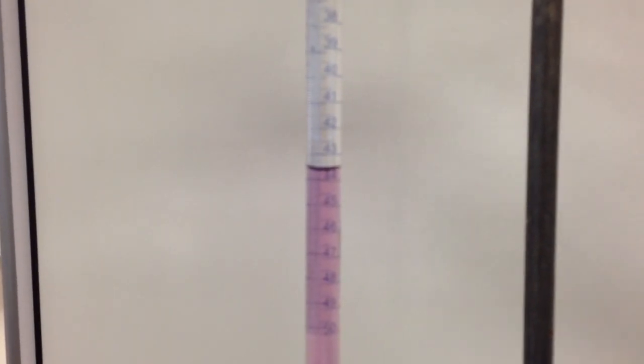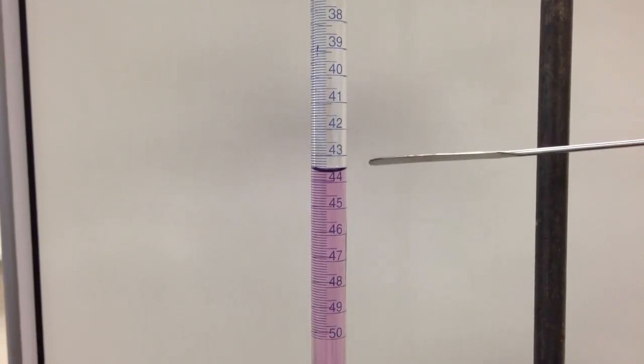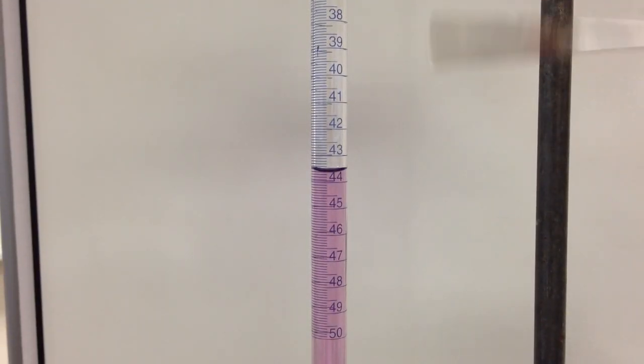burettes are read by reading the empty space above the liquid. So here we have our 1 milliliter increment: 43 to 44, 45.